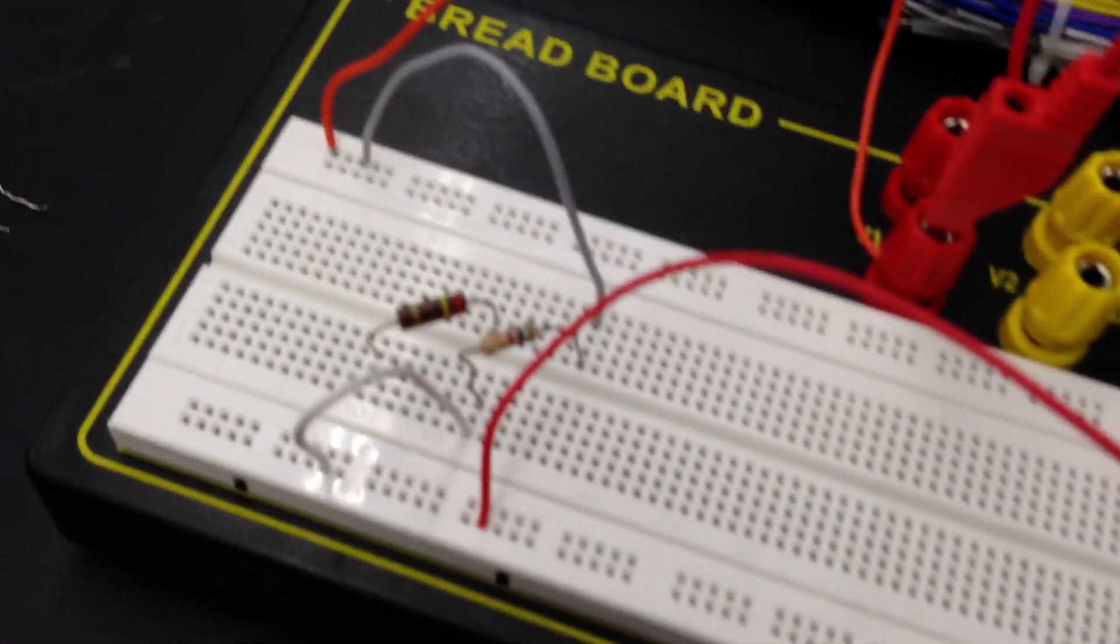Well, it's green and blue-brown. So that's 560 ohms.